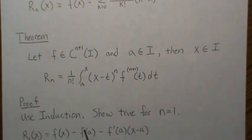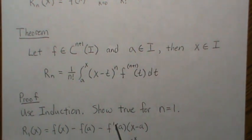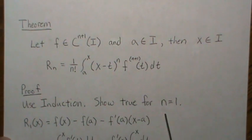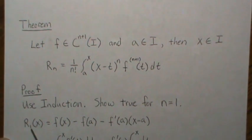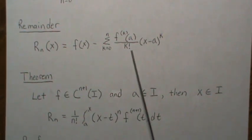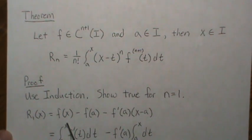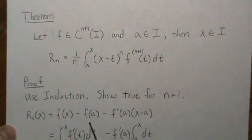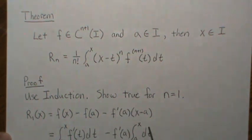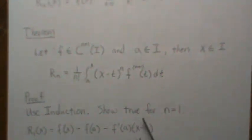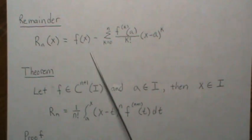And the proof is this, and we're going to use induction. So we're going to show it's true for n equal 1. So the remainder for 1, remember we're going to start up here. Then it's f of x minus f of a minus the first derivative of f evaluated a, x minus a. That is this form here.